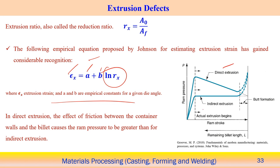Comparing direct and indirect extrusion: in direct extrusion, the whole billet moves forward, so the pressure requirement is maximum initially and then gradually decreases. In indirect extrusion, frictional force is reduced, so the peak stress is lower and remains more or less constant throughout. Overall, the RAM pressure is lower for indirect extrusion compared to direct extrusion, making indirect extrusion more feasible.